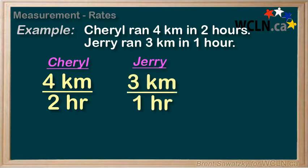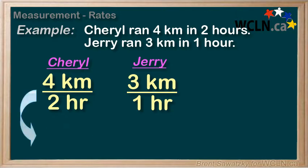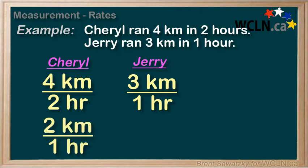Let's reduce Cheryl's rate to make the comparison easier. Dividing the top and bottom by 2 gives 2 kilometers over 1 hour. We see that Jerry was therefore running faster on average, as he was running 3 kilometers for every 1 hour.